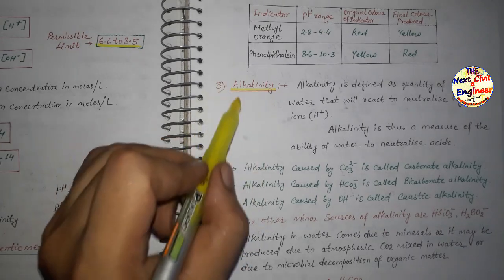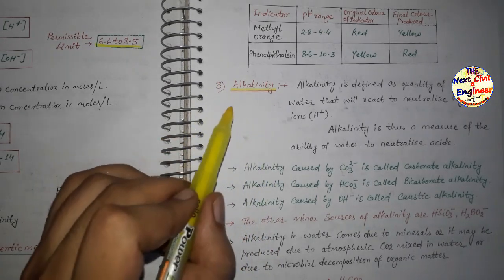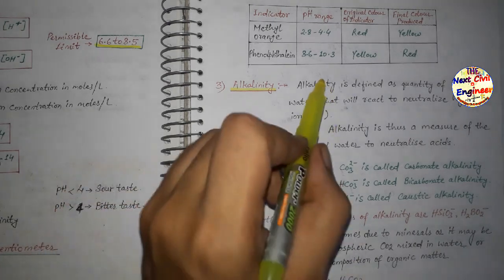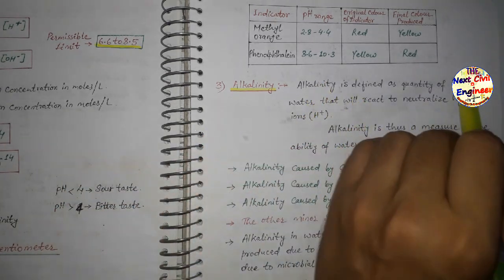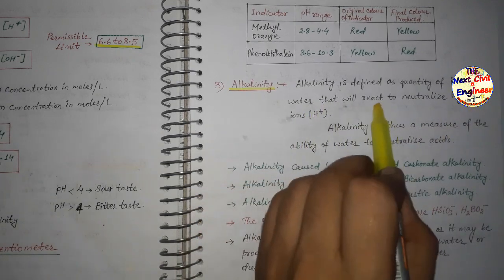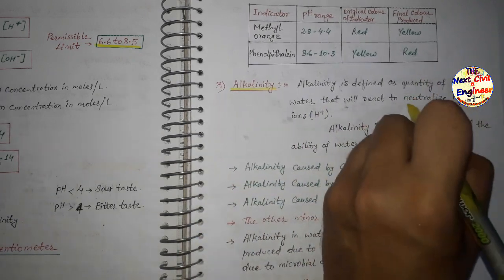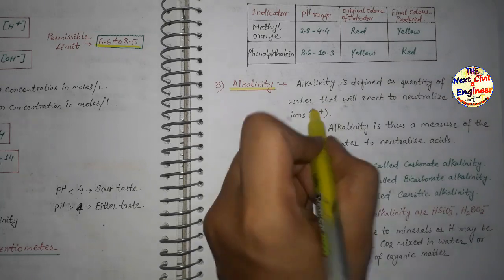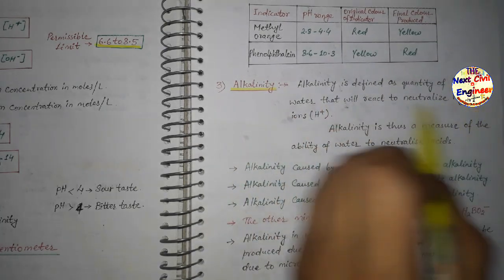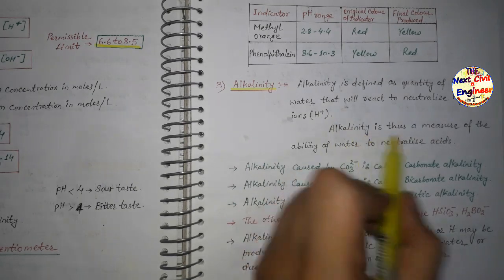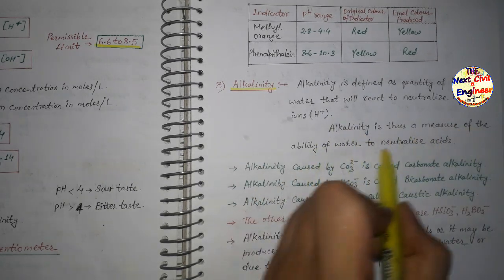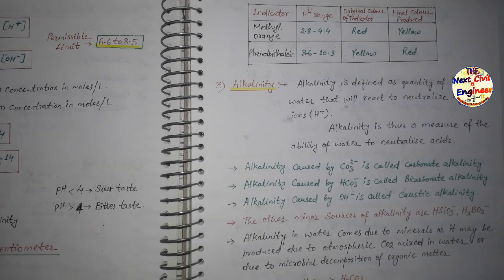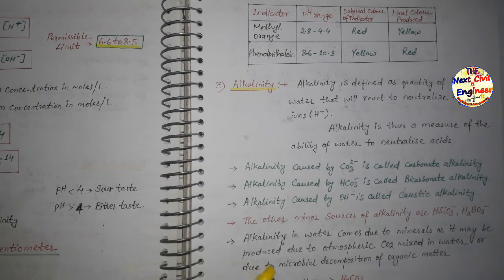Alkalinity is a very important topic with many questions in gate exams. Alkalinity is defined as the quantity of ions in water that will react to neutralize hydrogen ions (H⁺). Alkalinity is thus a measure of the ability of water to neutralize acids. After clearing these concepts, previous year questions will become much easier to solve.